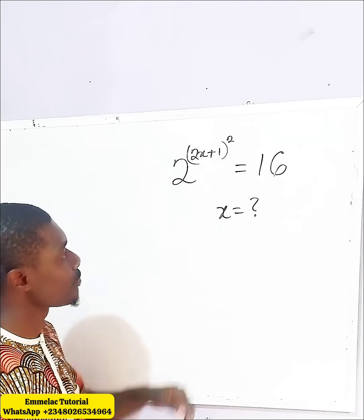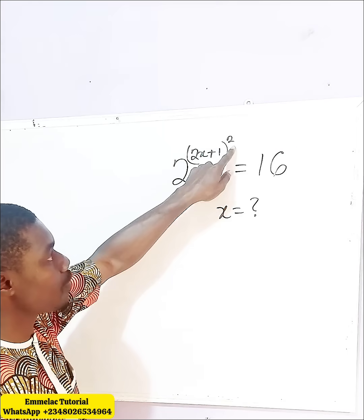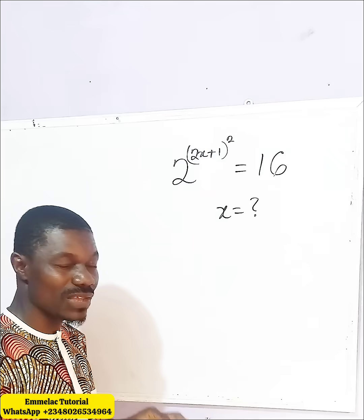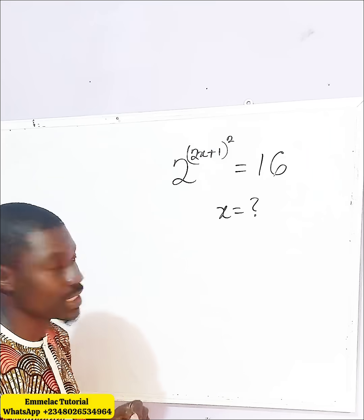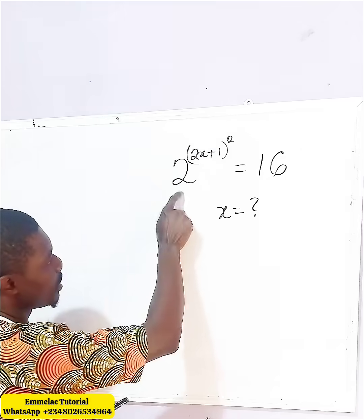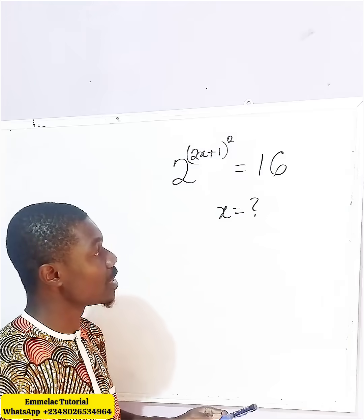Now take note of this. This exponent here is raised to the power of 2, so there's likelihood that x will be having two solutions. But let us see how it goes. Now here we have a base of 2, and here we have a base of 16.